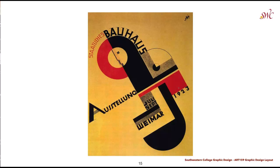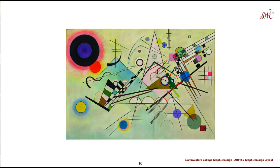Rotating the grid to create dynamic layouts and compositions for posters was very common within the Bauhaus movement. Wassily Kandinsky's Composition Number 8, created in July 1923 and currently in the Guggenheim Museum, demonstrates the use of a loose golden ratio as well as emphasis and the optical center.